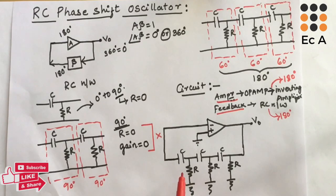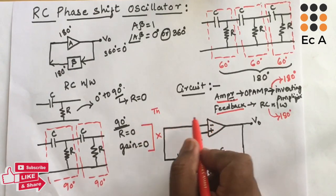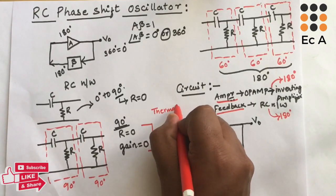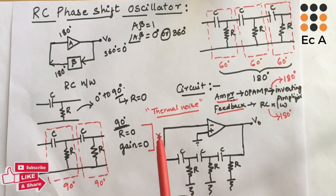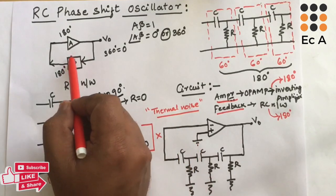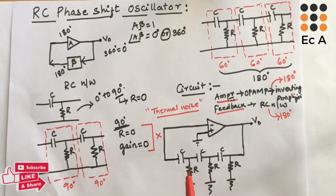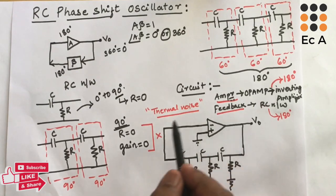Oscillators do not have any external input; they work without any input signal. Thermal noise present in the circuit is responsible for the oscillations. Thermal noise has multiple frequency components, and the feedback stage β acts as a frequency-selective device — it provides a phase shift of 0° or 360° for only one specific frequency component, where the phase angle between input and output equals 0°.